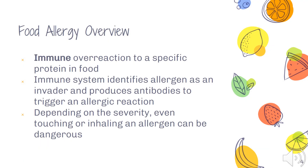A food allergy is more severe than a food intolerance because it involves an immune reaction to a specific protein in food. A person's immune system will identify an allergen as something foreign and not supposed to be there, so it will produce antibodies to trigger an allergic reaction. They can range in severity — some people might have a milder allergy and can be around an allergen but just can't consume it, whereas someone else might have a peanut allergy so severe they can't even breathe in peanuts without a response.